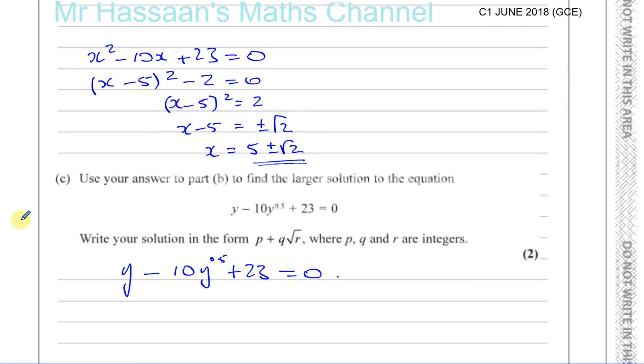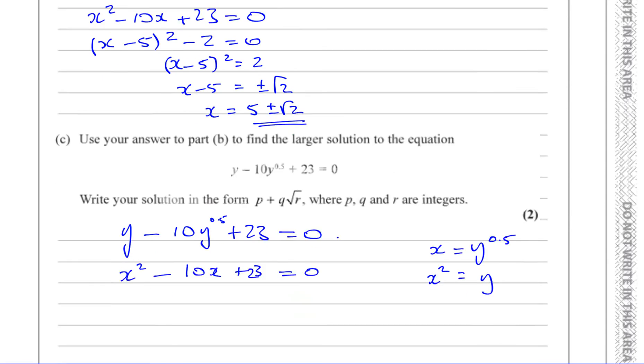So we have y minus 10y to the power of 0.5, which is like half, plus 23 equals 0. Now, if we look at what we have solved above, we solved x squared minus 10x plus 23 equals 0. And you can see that they're in the same form. You've got something minus 10 times something plus 23. And if you notice very carefully, if we just say let x be y to the power of 0.5, if x is y to the power of 0.5, then of course x squared is the same as y.